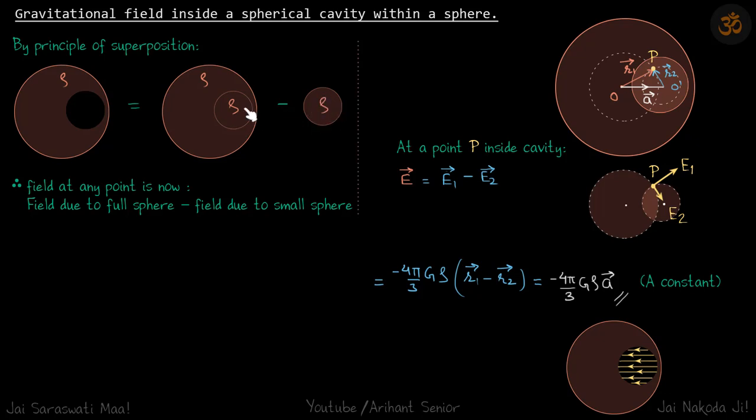You can imagine that we are adding and subtracting the same amount at the empty space. Now field at any point is field due to the full sphere minus field due to the small sphere.